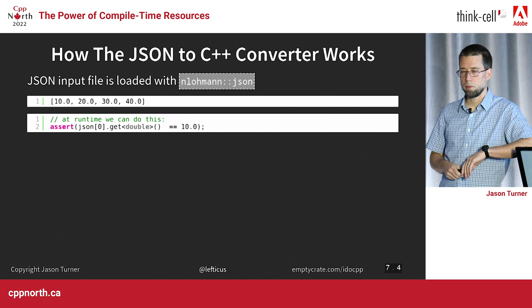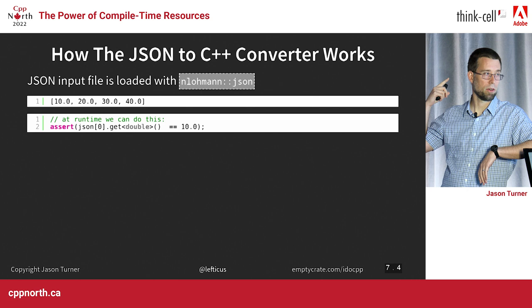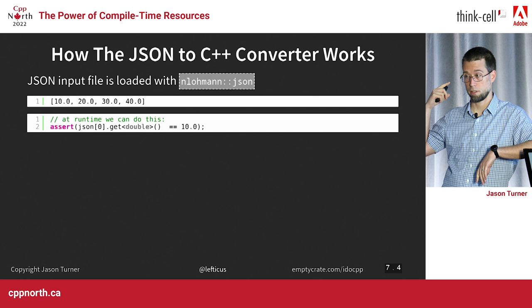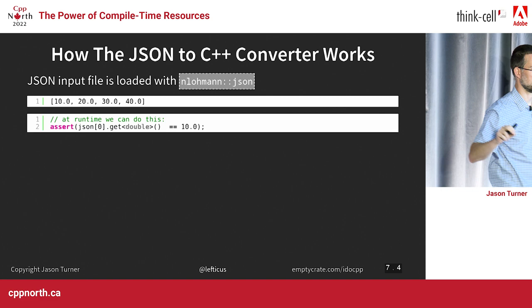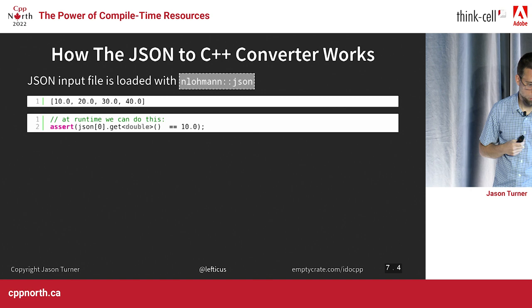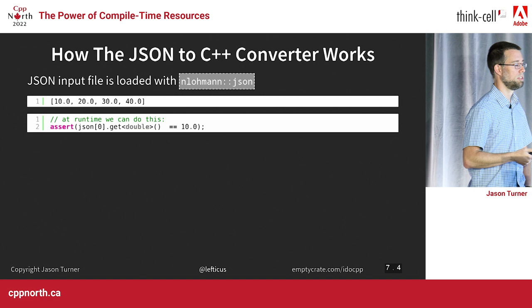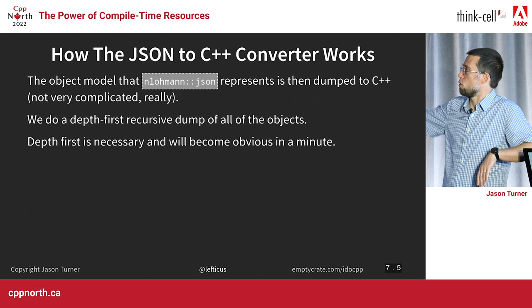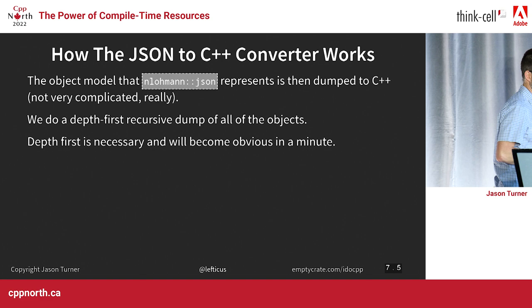This is approximately what it looks like. I have whatever my JSON file is, it gets fed into JSON to CPP, and it generates three output files. Document.hpp is the header file you use if you just want runtime access to the data — you don't care about compile time. Document_impl.hpp is the actual data itself, so you can get compile time access. And document.cpp is a file that you can compile that simply includes document_impl.hpp, giving you a compilation firewall. Do I want just runtime access? Do I want runtime and/or compile time access? It's all generated for you.